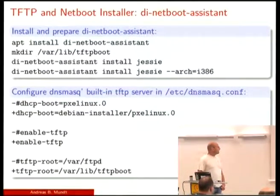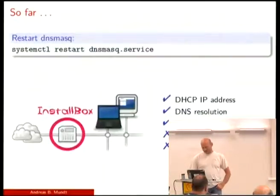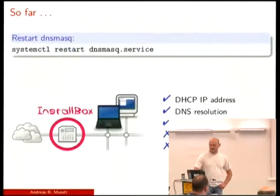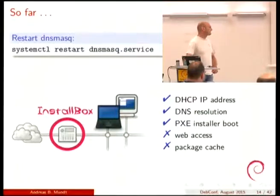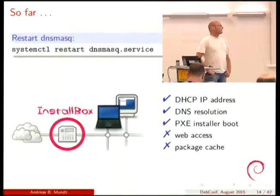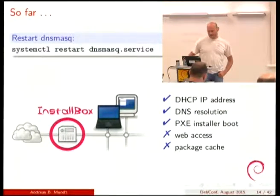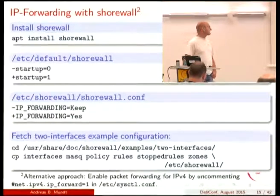We just have to tell our dnsmasq to serve these images at the right time. We put the path into the dnsmasq configuration, enable the TFTP server, and tell it where to find the PXE binary. Then we start the service. If we check what we need versus what we already have, we find that DHCP IP address assignment works with DNS resolution, and PXE installer boot works — but we don't have web access yet, and we don't have a package cache so far.